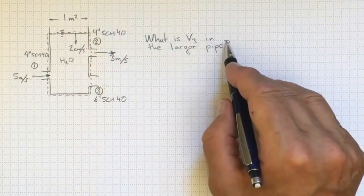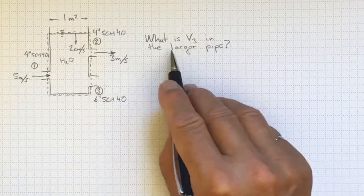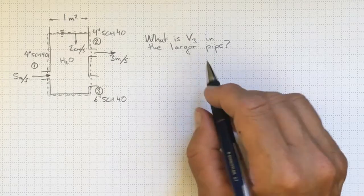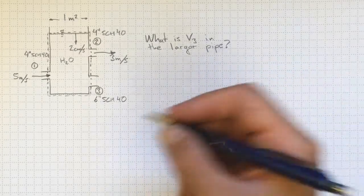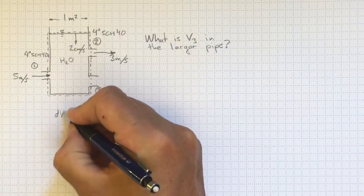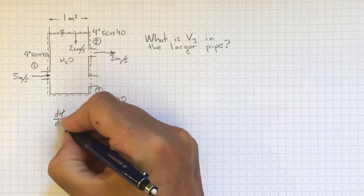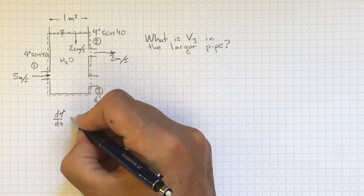So I'd like to know what is the volume or what is the velocity in the larger pipe? I'll sit down and say first off that the rate of change of the total volume in the tank with time must be equal to the differences between these three inflows and outflows.